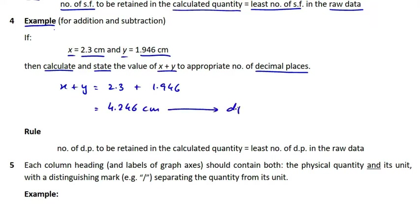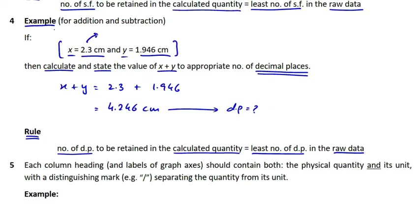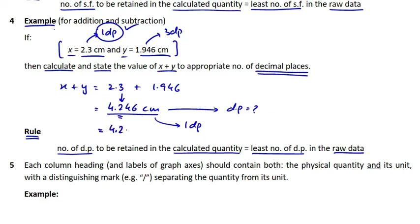We have to round off this value to the appropriate number of decimal places. The rule says the number of decimal places to be retained in the calculated quantity should equal the least number of decimal places in the raw data. x has one decimal place and y has three decimal places. Since x has the least, the value of x + y should be rounded to one decimal place, giving 4.2 centimeters.